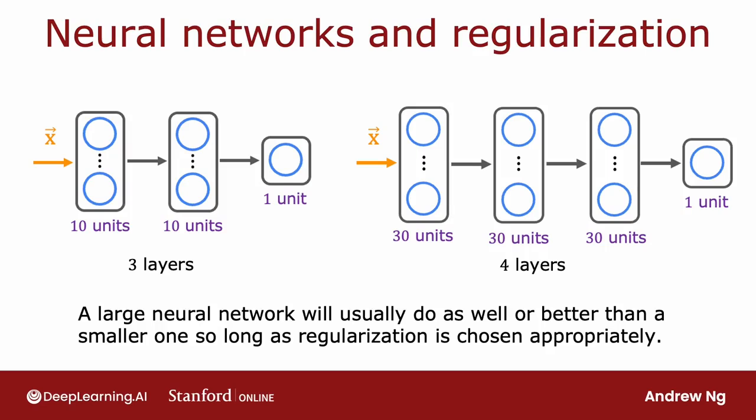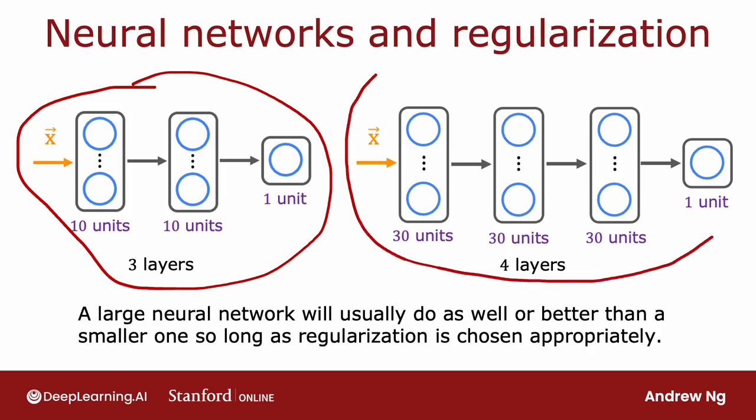And so, for example, if you have a small neural network like this, and you were to switch to a much larger neural network like this, you would think that the risk of overfitting goes up significantly. But it turns out that if you were to regularize this larger neural network appropriately, then this larger neural network usually will do at least as well or better than the smaller one, so long as the regularization is chosen appropriately. So another way of saying this is that it almost never hurts to go to a larger neural network so long as you regularize appropriately.